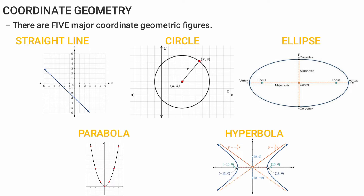This is a section line. This is a straight line. This is a circle. This is a straight line.